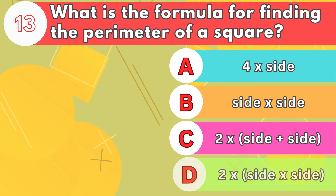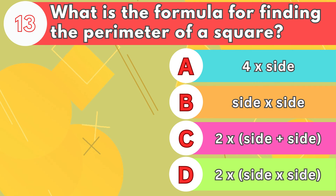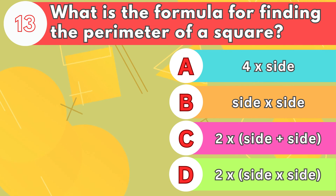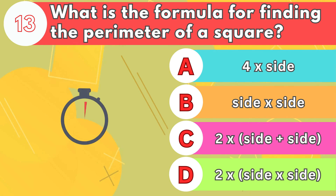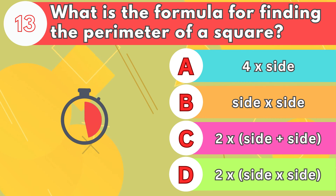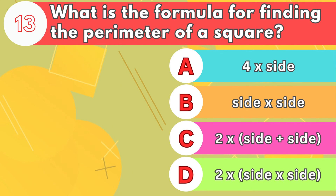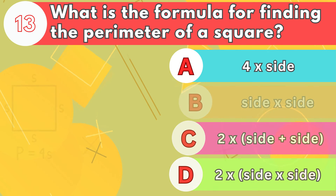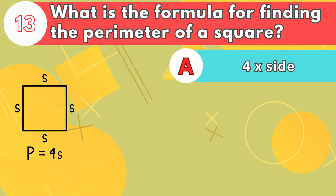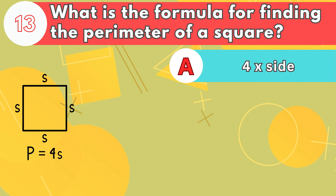Number 13. What is the formula for finding the perimeter of a square? The answer is letter A, four times side.